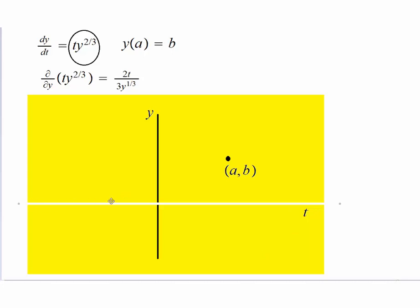Uniqueness cannot be guaranteed along this y equals 0, or for this point (a,b), for the initial condition y(a) equals b, along this line y equals zero, as I said, uniqueness cannot be guaranteed.